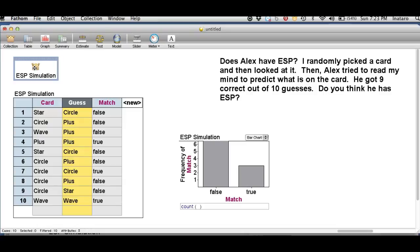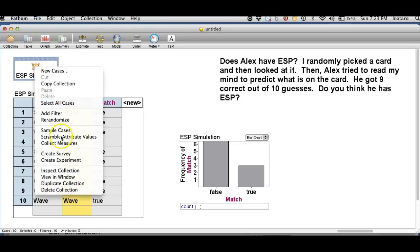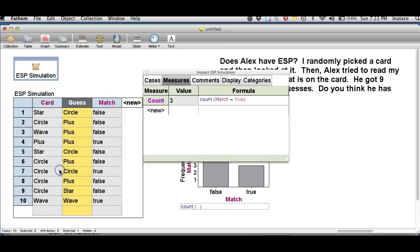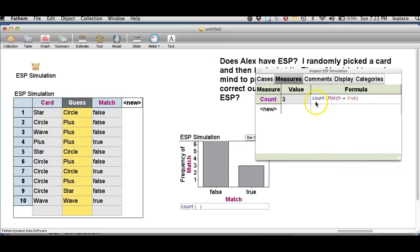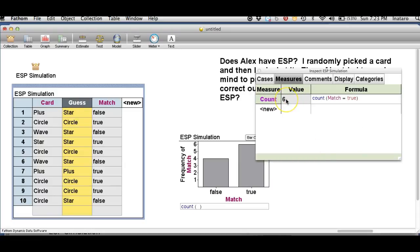Let's use Fathom to help us count how many matches we have in each of our simulations. Let's go to inspect collection and you'll notice I have a measure here that I've already filled in called count, where we're going to count the number of times match is true. In other words, count the number of matches. Notice now we have six matches and that's shown here in our bar graph as well.